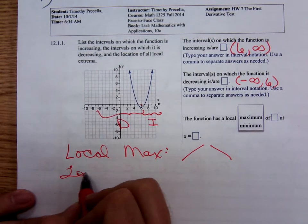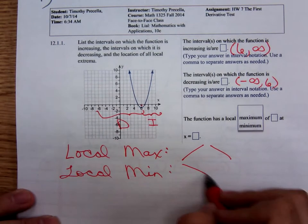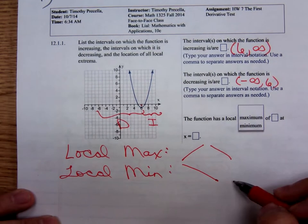A local minimum occurs when the function is decreasing and then changes to increasing.